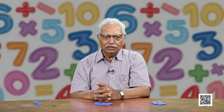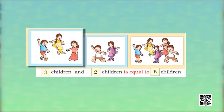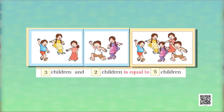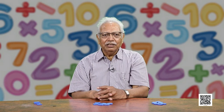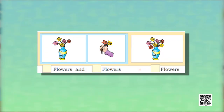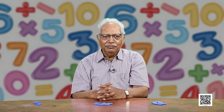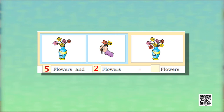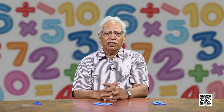Similarly, these are 3 children playing and 2 more children join them to play. So how many children do they become? This number is equal to 5 children. So now we are using the word 'equal to.' And now we are counting flowers in the vase — how many flowers? 5 flowers and then 2 more flowers are added. I am counting further: 5 and 2 more flowers, so it becomes 6 and 7. All together 7 flowers, or we can say 5 flowers and 2 flowers are equal to 7 flowers.